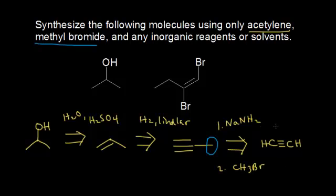Now we've done it using retrosynthesis. If you were to write this on a test, you would write it in reverse order: start with acetylene, then use a regular arrow. First step, add sodium amide, then add methyl bromide for an alkylation reaction to put an alkyl group onto acetylene. Now you have a terminal alkyne, which you can turn into an alkene by adding hydrogen gas and a poison catalyst that stops hydrogenation at the alkene form. Then use a Markovnikov addition of OH using water and sulfuric acid to add OH to your alkene, and you're done.